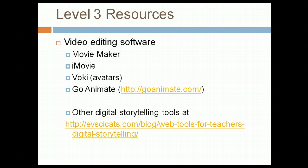Level three resources: you want students to make videos. Video editing software options include Movie Maker or iMovie depending on Mac or PC. Voki avatars are really fun — at voki.com, you create avatars, type in text, and the avatars say it for you. GoAnimate works similarly, where you create avatars and settings and type text that gets animated. A list of digital storytelling tools can be found at a blog address linked in the slides for additional video-making options.